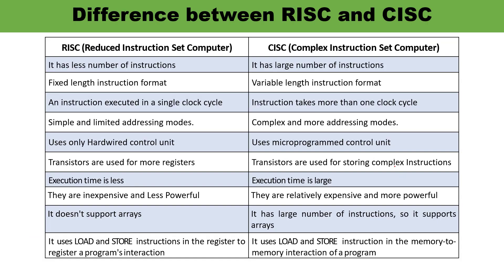Now let us discuss the differences between RISC and CISC. First, RISC has fewer instructions while CISC has a large number of instructions. RISC has a fixed-length instruction format and each instruction is executed in one clock cycle, while CISC has a variable-length instruction format — it may have two or three instructions per format — and it takes more than one clock cycle to execute instructions.